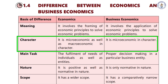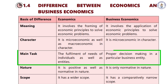The character of business economics is mainly microeconomic in nature, whereas general economics covers both micro and macroeconomics. The main task of business economics is decision-making for a business firm or business entity.